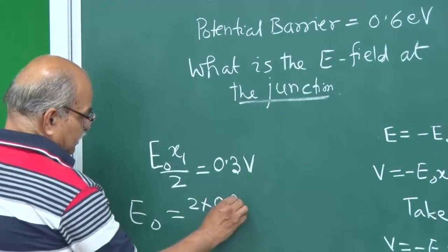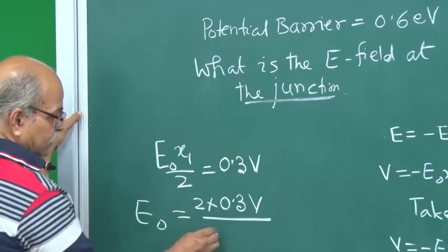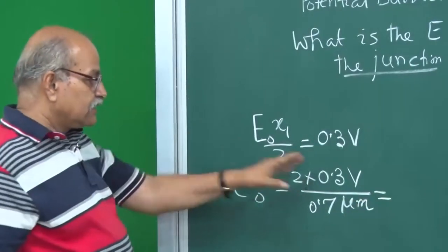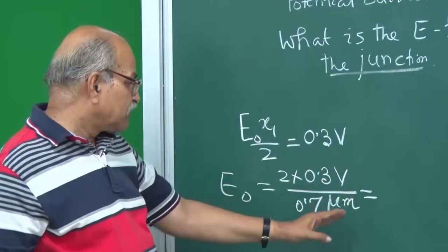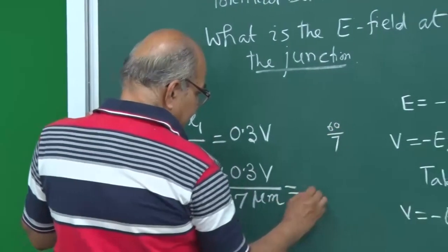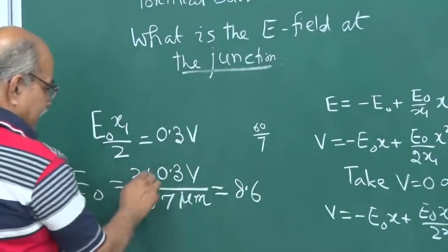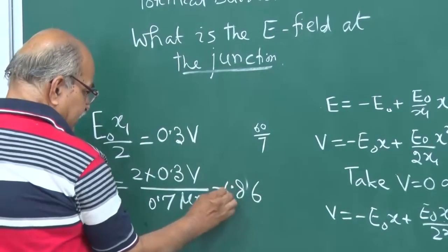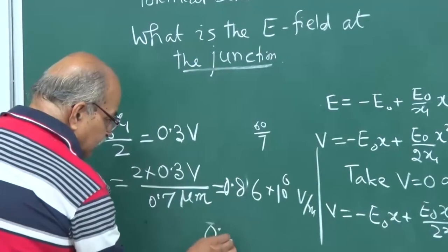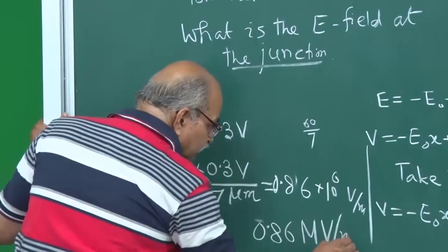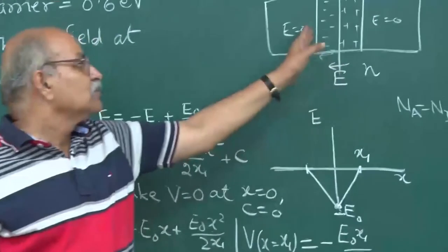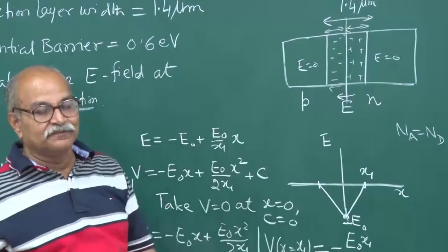With x₁ = 0.7 micrometers = 0.7 × 10⁻⁶ m, E₀ = 0.6 / (0.7 × 10⁻⁶) ≈ 0.86 × 10⁶ V/m, or 0.86 megavolts per meter. That is the maximum magnitude of the electric field, which exists at the junction. As you move away from the junction on either side, the field linearly decreases to zero. We will stop here and next time we will do some special p-n junction diodes.